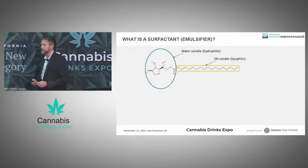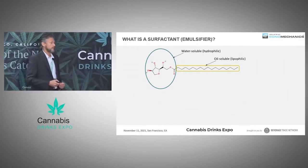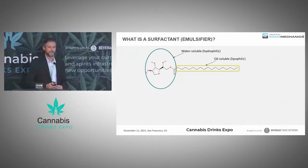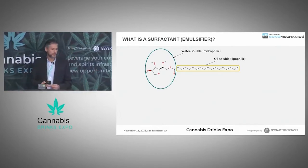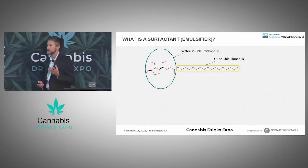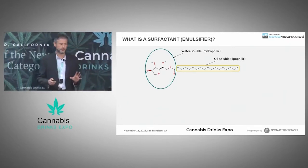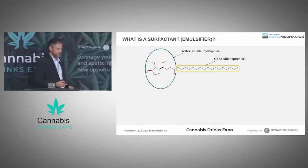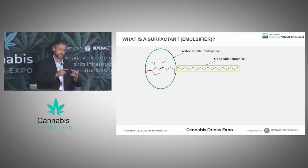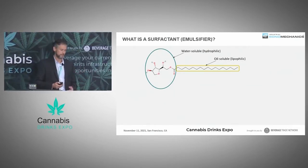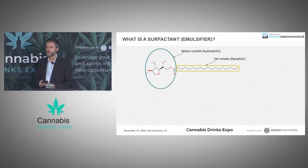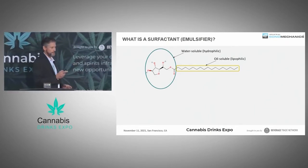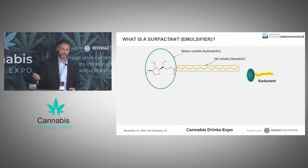Before we get into the composition of nanoemulsions, what exactly are they, we need to quickly talk about what a surfactant is. If you take a water-soluble molecule and fuse it to an oil-soluble molecule, you have an entity where the head part dissolves in water but not oil, and the tail — a fatty acid tail — dissolves in oil but not water.